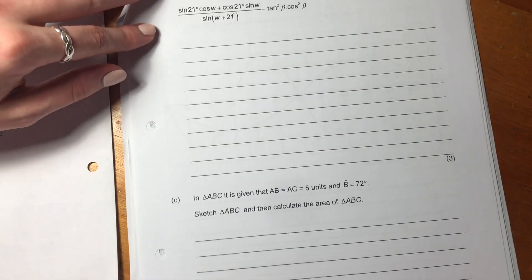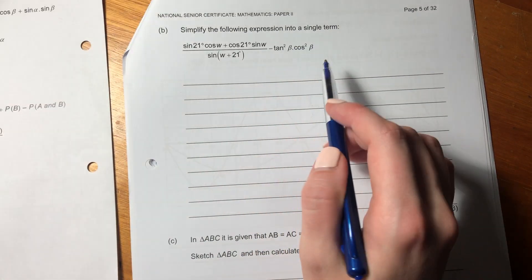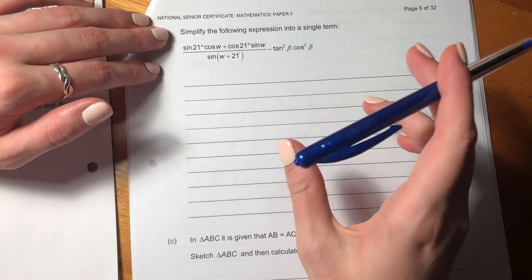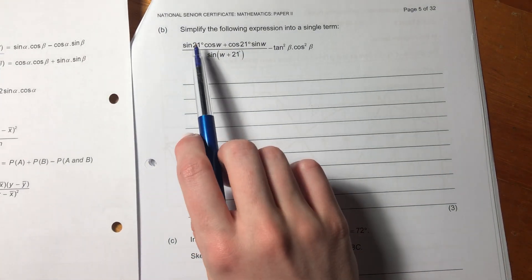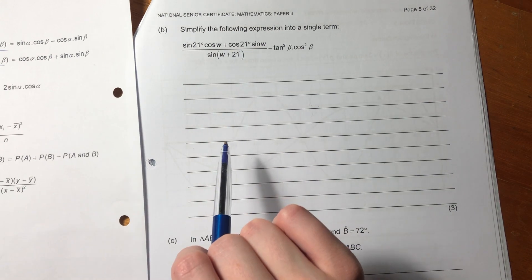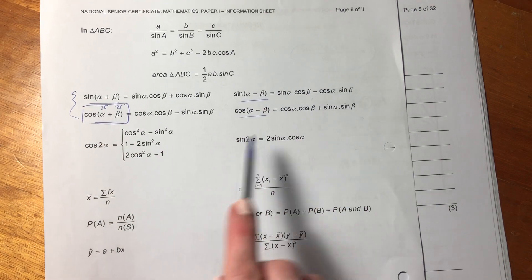So this is quite a classic question, the one that we're about to do. It says simplify the following expression into a single term. So they often give these quite convoluted things and you're like, oh goodness gracious, what must I do? But it's actually okay. Let's see what we can do. So we see here that we have sine 21 cos w, cos 21 sine w. So you should be thinking, let me go look at these guys here and see where this fits in.